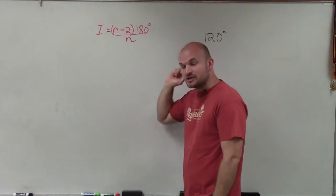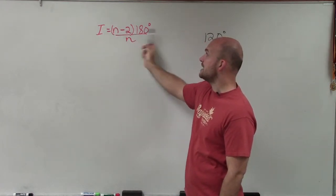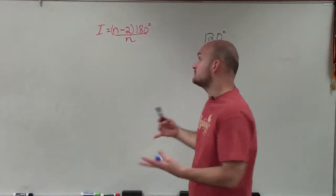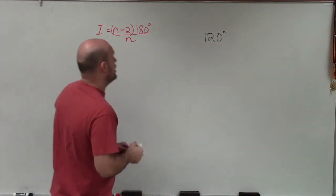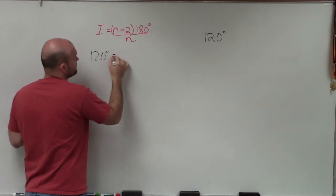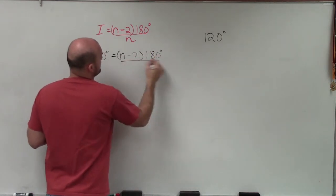So the formula that we have to find the measure of an interior angle is i, which is the interior angle, equals n minus 2 times 180 divided by n, where n represents the number of sides. So the number of sides is what we're trying to find, but the only thing we're provided is 120 degrees for the measure of the interior angle. So I'm going to plug that in for i equals n minus 2 times 180 degrees divided by n.